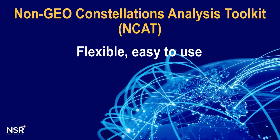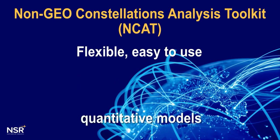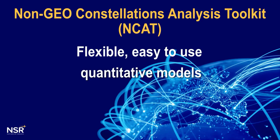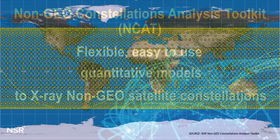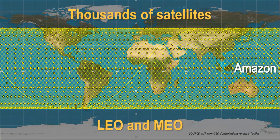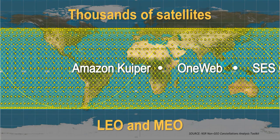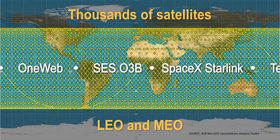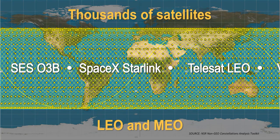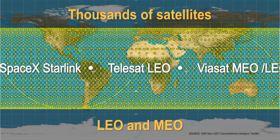NCAT is an assembly of flexible and easy-to-use quantitative models that x-ray and benchmark non-geo SATCOM constellations. Constellations populated with thousands of satellites are being deployed in both LEO and MEO orbits.